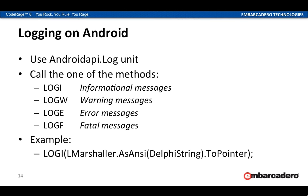For logging on Android, you use the Androidapi.Log unit. They have four different methods you can call: Log.i, Log.w, Log.e, and Log.f. Each does the same thing except they flag the message as either informational, warning, error, or fatal. Functionally they're all the same — the only difference is how they're flagged in the log output. You can log all your messages as information messages if you want, or all as fatal messages. Logging something as a fatal message doesn't trigger any immediate failure.